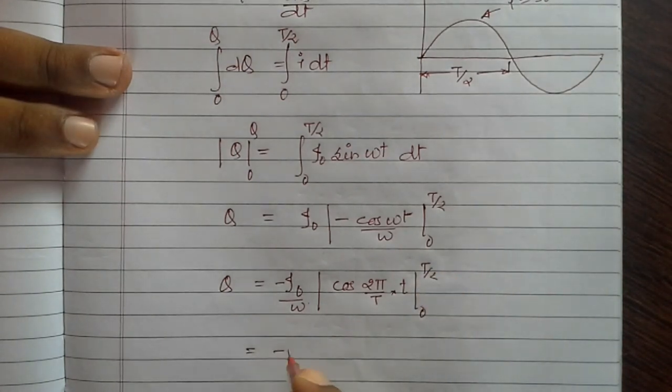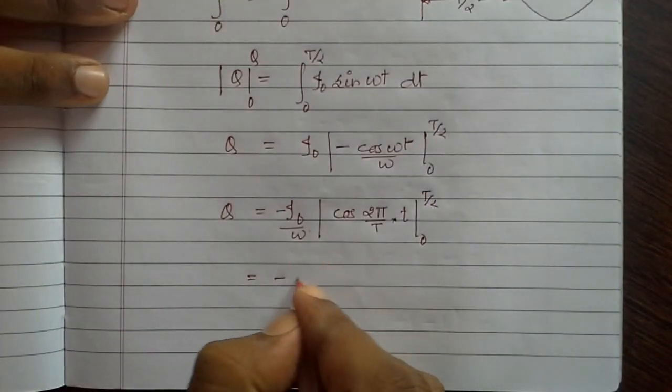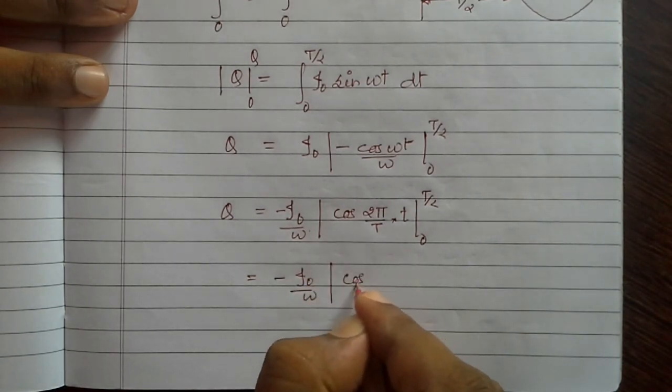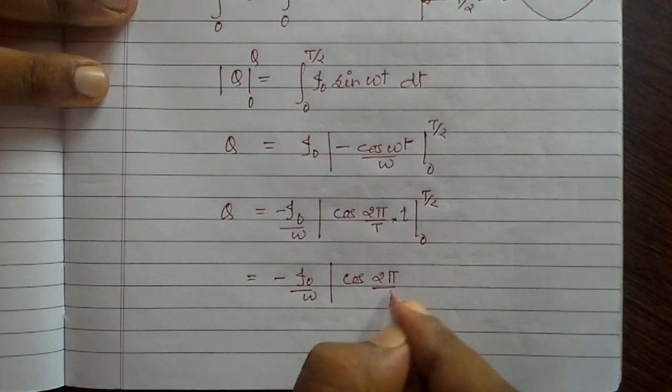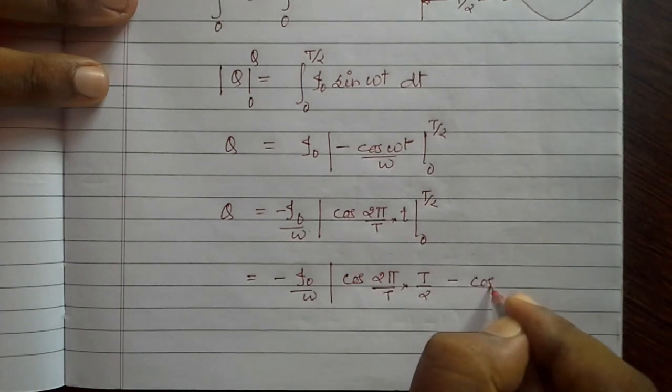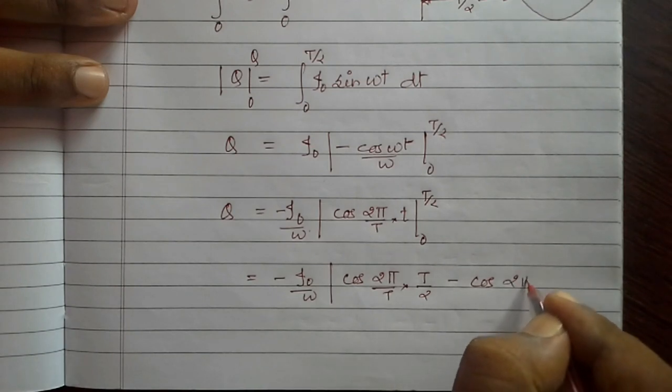That is minus i0 by omega into cos 2 pi by T into T by 2, minus cos 2 pi by T into 0.